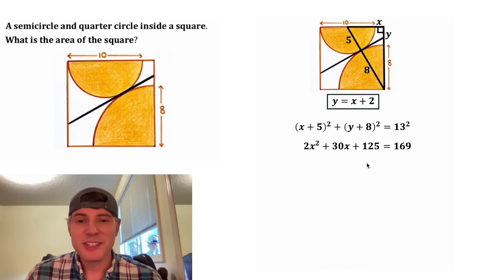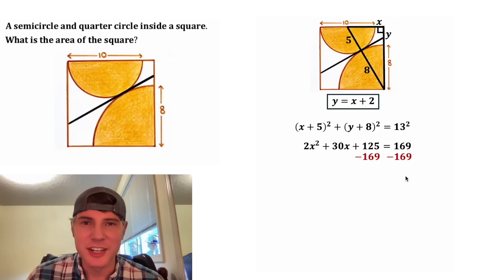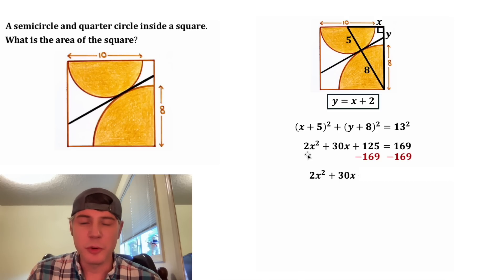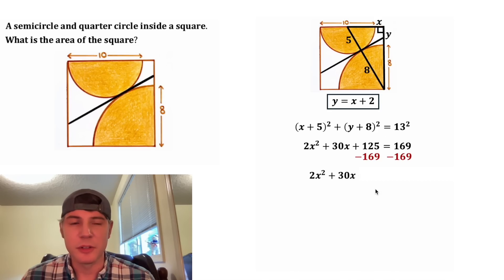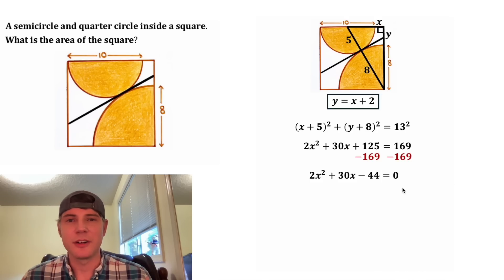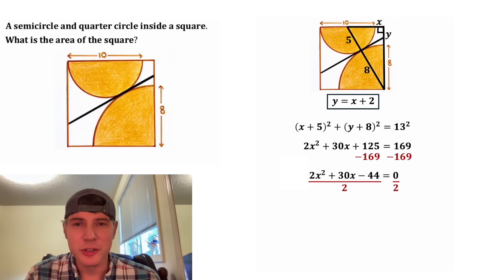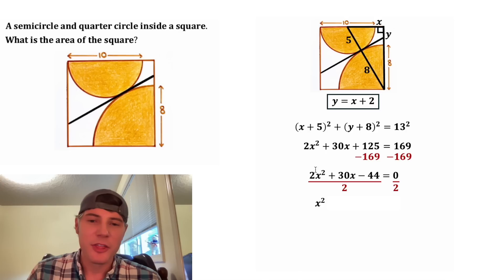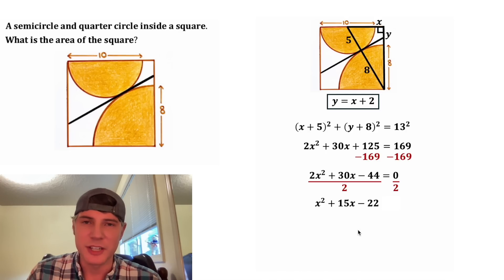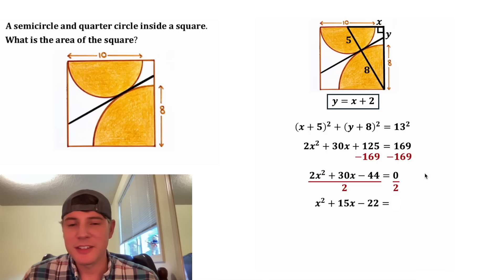Since we have a quadratic, we want to set this whole thing equal to 0. So let's subtract 169 from both sides. The 2x squared and the 30x can be copied down. 125 minus 169 is equal to negative 44. And 169 minus 169 is equal to 0. Next, let's divide everything by 2. 2x squared divided by 2 is x squared. 30x divided by 2 is 15x. And negative 44 divided by 2 is negative 22. On the right-hand side, 0 divided by 2 is equal to 0.